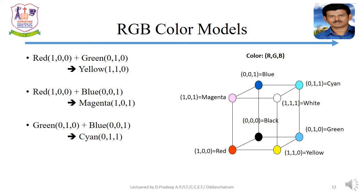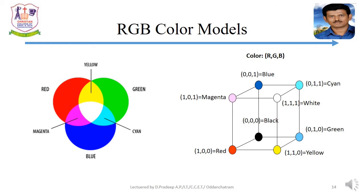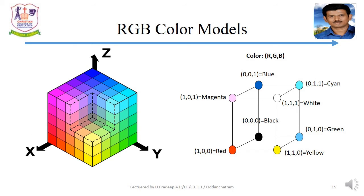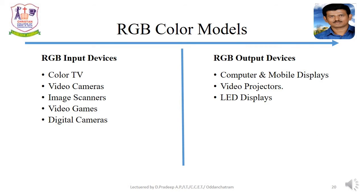Black is represented as (0, 0, 0) and white as (1, 1, 1). In the cube's cross-sectional diagram, the diagonal from black to white gives the gray colors. (0.5, 0.5, 0.5) represents gray. Moving toward black — for example, (0.25, 0.25, 0.25) — gives dark gray. Moving toward white — for example, (0.75, 0.75, 0.75) — gives light gray. RGB is used by both input and output devices.